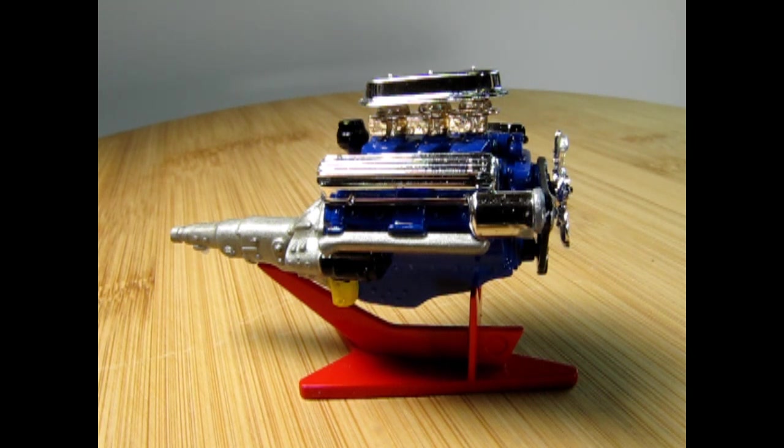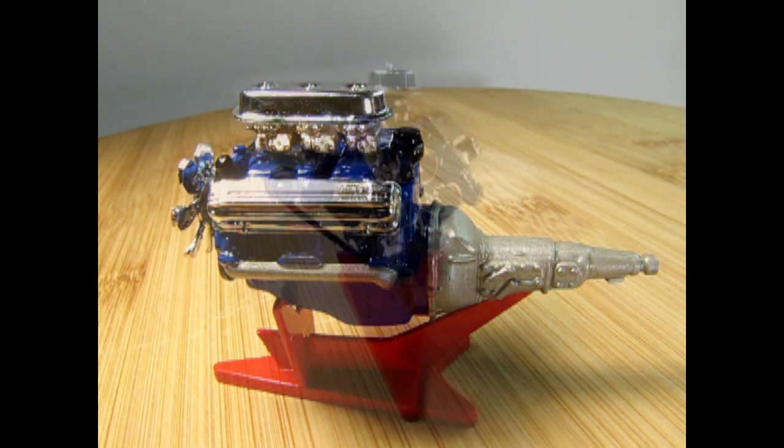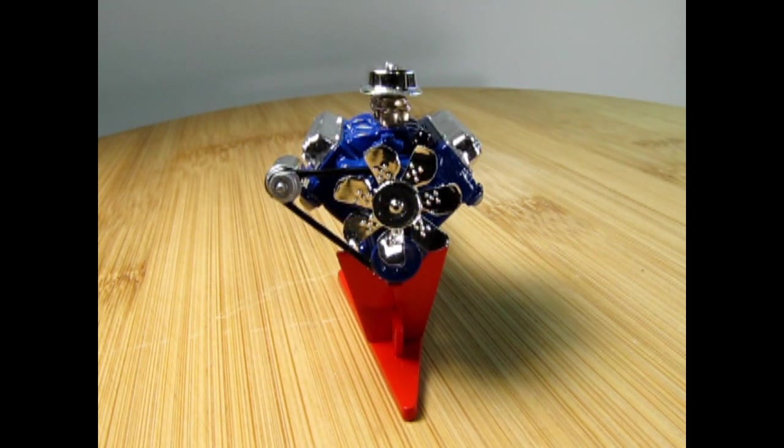Two missing parts are the coil and the generator mounting bracket. To further detail this engine, I would fabricate and install the missing items. I would also add in those spark plug wires to the correct firing order and add in a dipstick. What would you do to improve this engine? Let us know in the comment section down below.